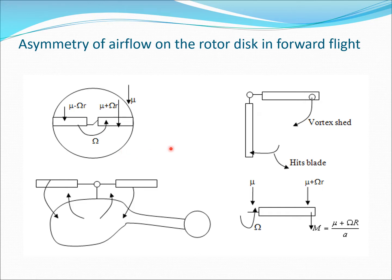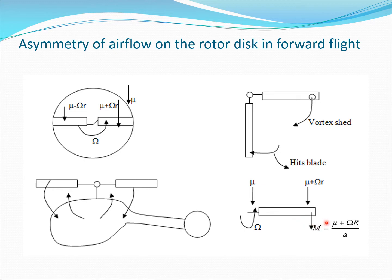The second source is that vortices are shed from the rotor blade and these vortices crash into the blade just behind — this is the source of BVI vibration. A third possibility is that on the advancing side, the Mach number goes up quite substantially. The Mach number at the tip is mu plus the rotation speed component divided by the speed of sound. Even though the helicopter flies at a reasonably low speed, the Mach number at the blade tip can become quite high, leading to deleterious effects of compressible flow such as shocks and wave drag.